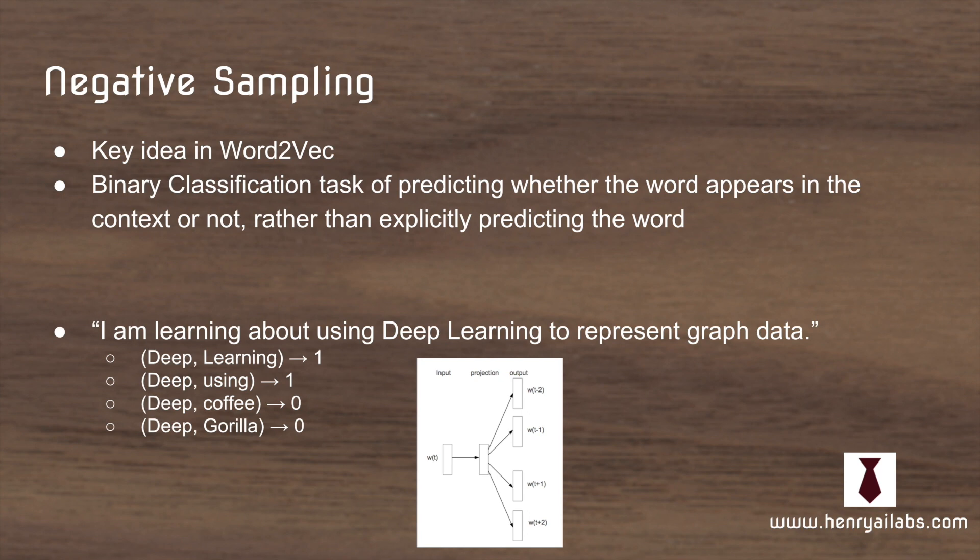Negative sampling is another one of the key ideas in Word2Vec. What this says, instead of directly predicting the context words, you just predict the binary label of whether this word appears in the context or not.